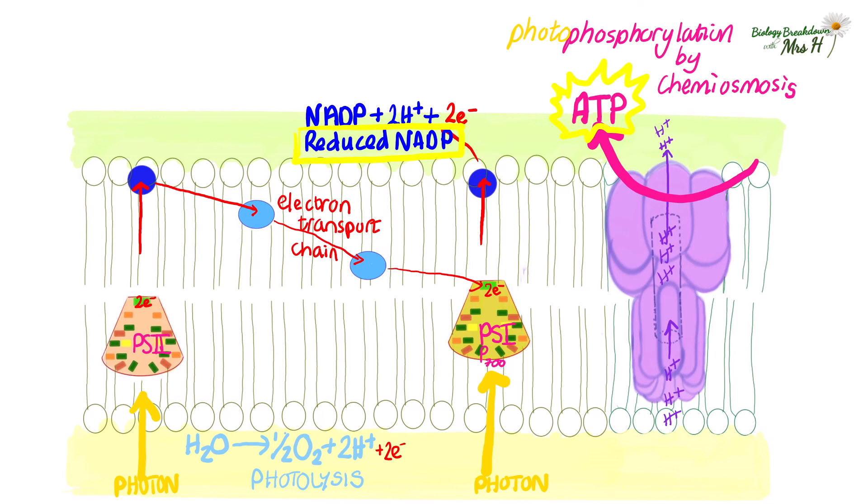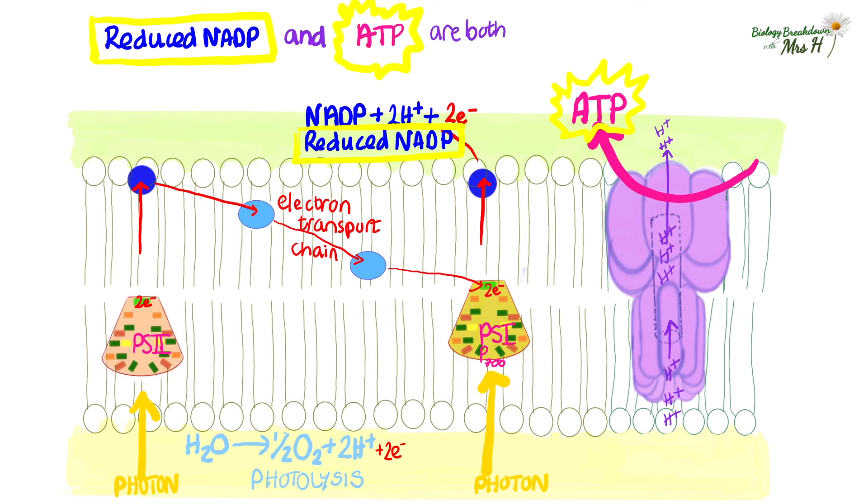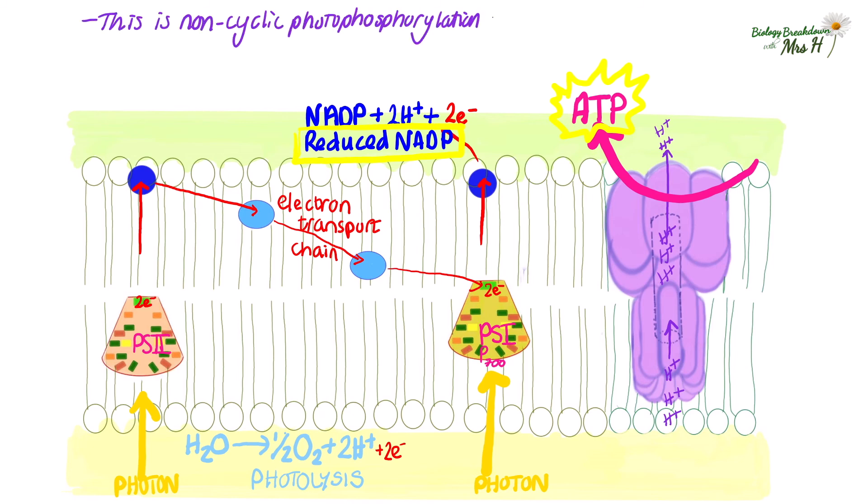We have a look now at what's been produced. We've got reduced NADP and ATP and both are needed for the next stage of photosynthesis. This process so far is called non-cyclic photophosphorylation. And it involves both photosystem 1 and photosystem 2.